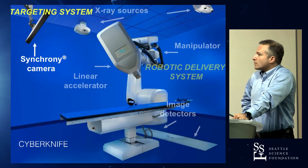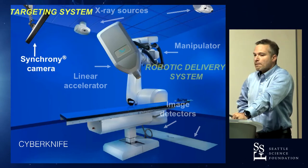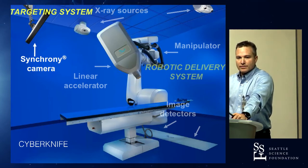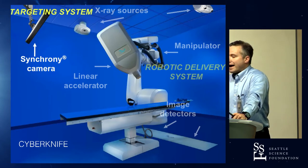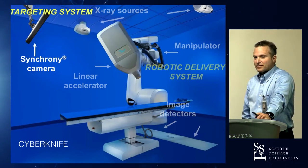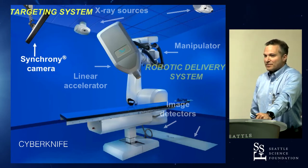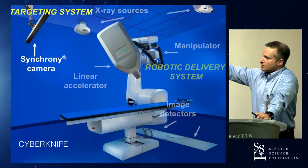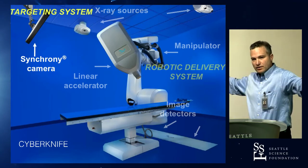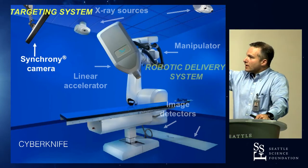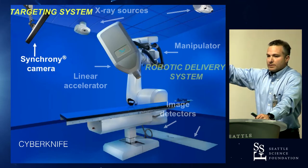The CyberKnife is a robotic arm — the same industrial robot used on assembly lines at the Tesla and BMW factories, made by a company called KUKA. It's very accurate and hard-working. The first key technology was miniaturizing the linear accelerator to around 350 pounds so it could mount on the robot head — the other linacs are just too big. The second was the software: image detectors in the floor and cameras up top allow real-time imaging of the patient during treatment, enabling motion correction for roll, pitch, and translation.